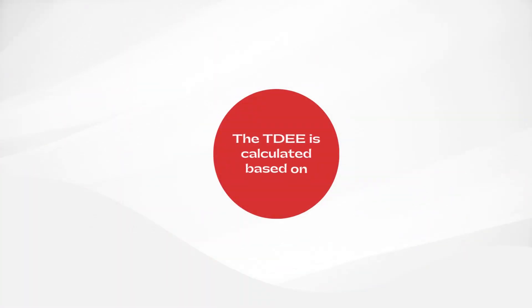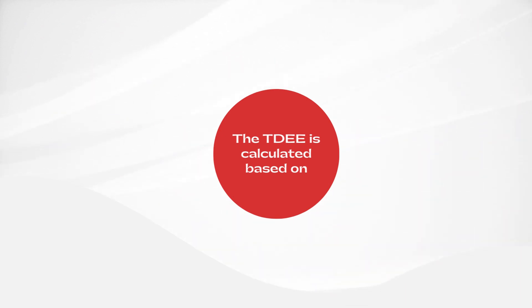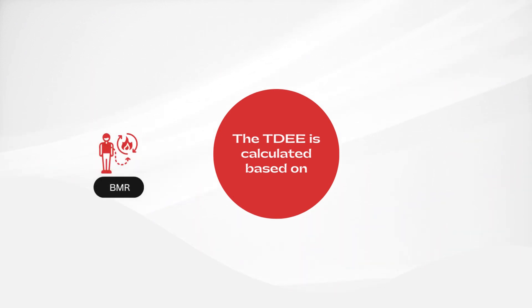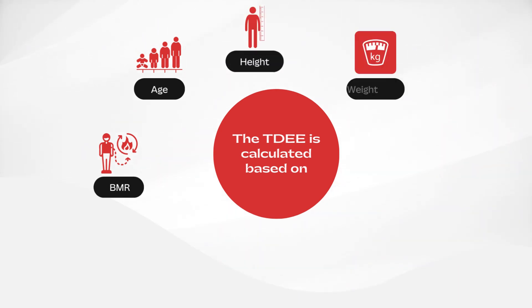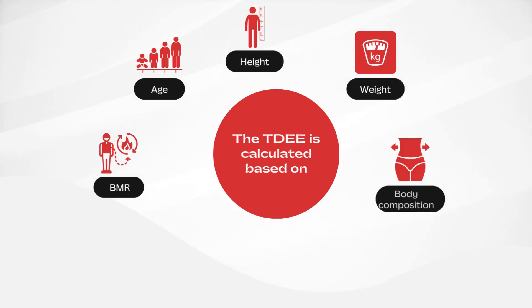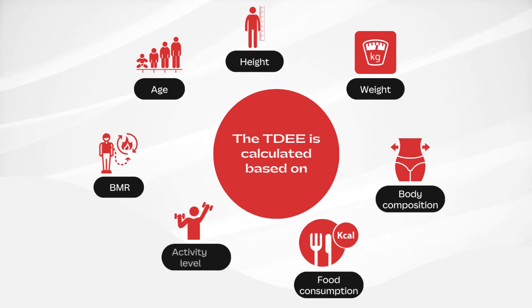The TDEE is calculated based on several factors, including an individual's basal metabolic rate, age, height, weight, body composition, food consumption, and activity level.